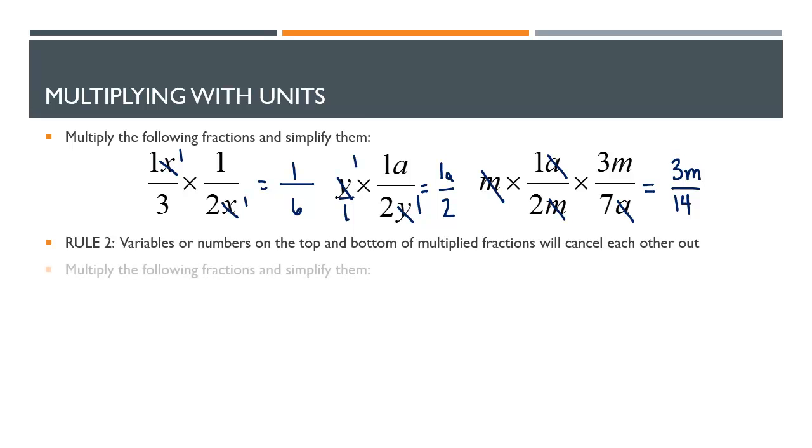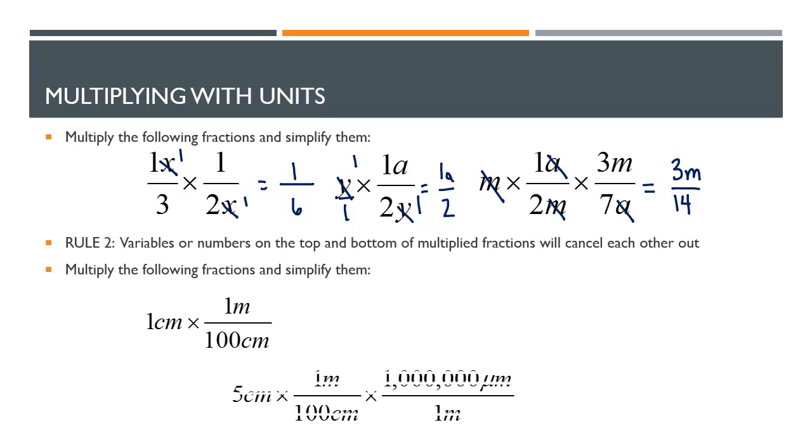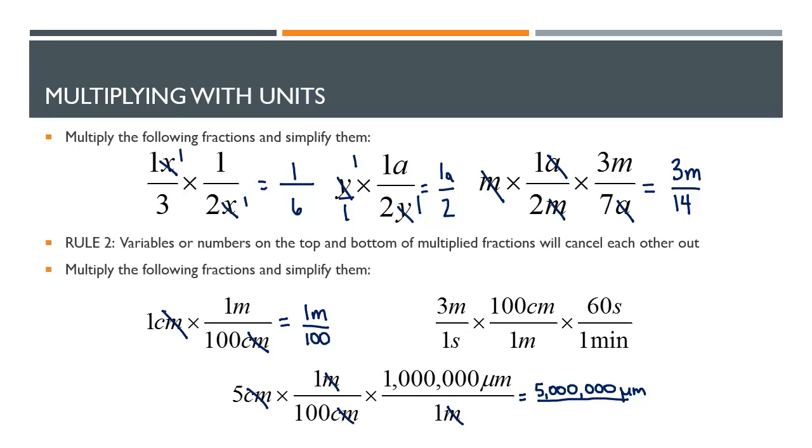We can treat a unit just like a variable. So if we have centimeters here and centimeters here, they can cancel, which gives us 1m over 100. Keep in mind we have to keep those units, we have to bring those units all the way across if they're not cancelled out. Here we can cancel out centimeters and meters. So what we're left with is 5,000,000 micrometers over 100.